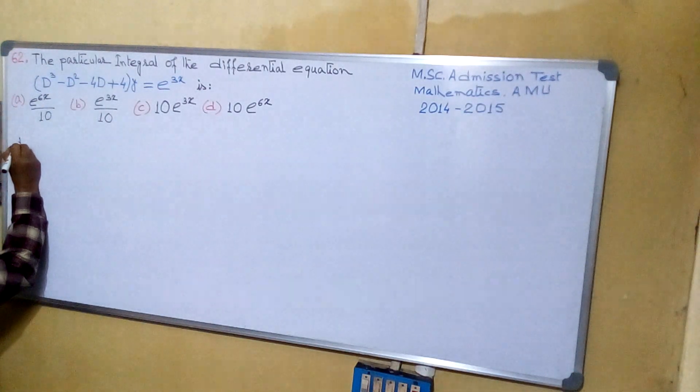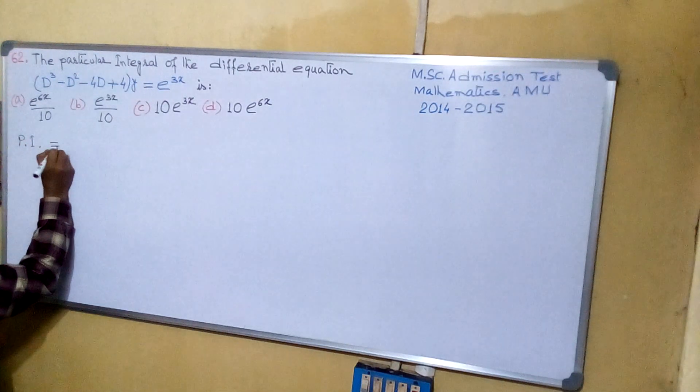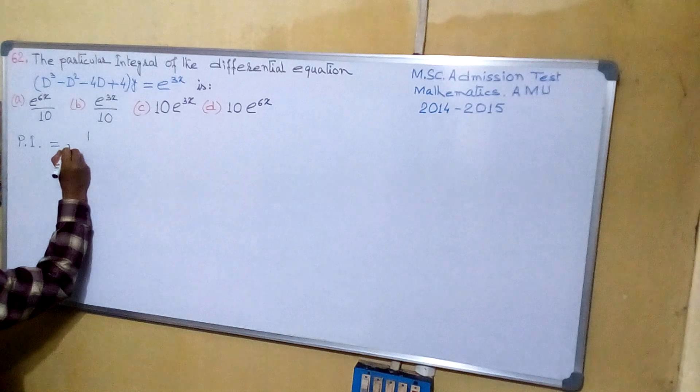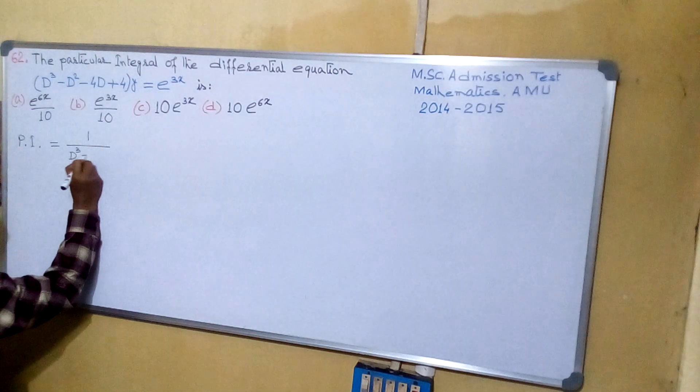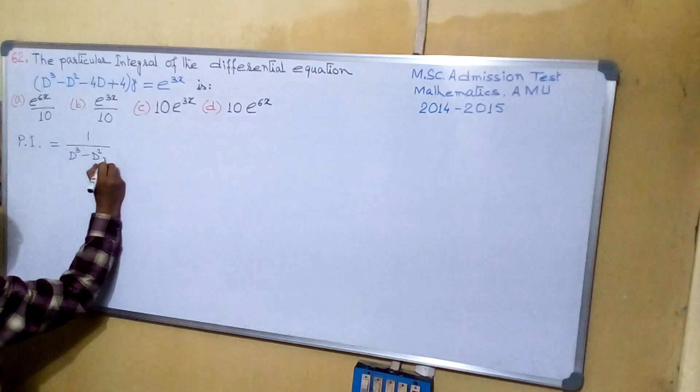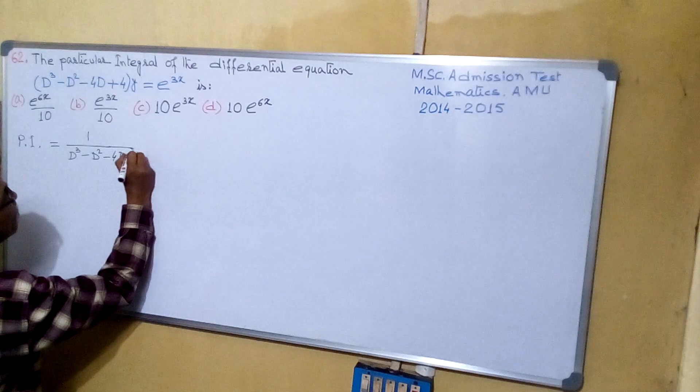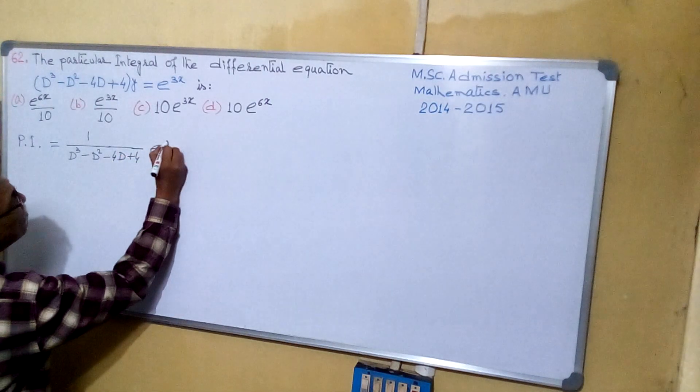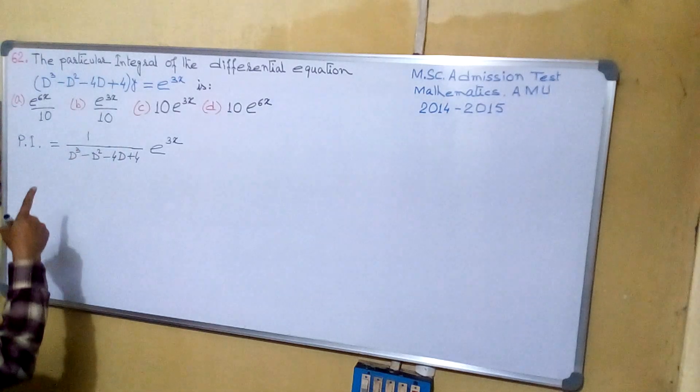We are knowing particular integral equals to 1 by d³ minus d² minus 4d plus 4, e to the power 3x. Now one thing is there.